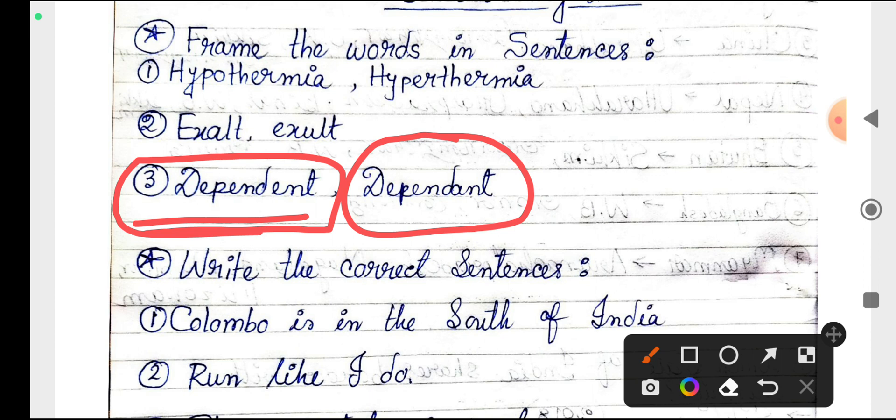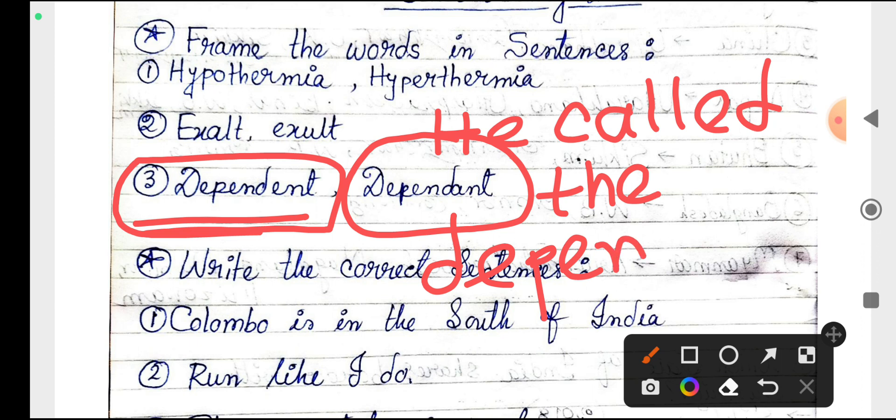He called the dependents. So dependent means he called the dependent people. But he is dependent on him, this is an adjective. And dependent is a noun. He called the dependents, meaning he called the dependent people.